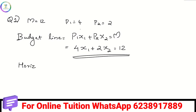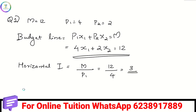For the horizontal intercept, we calculate M divided by P1. M is 12 and P1 is 4, so the horizontal intercept is 3. For the vertical intercept, it is M divided by P2. M is 12 and P2 is 2, so 12 divided by 2 gives 6.